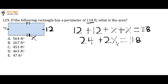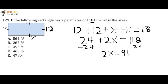Now I want to get X by itself. So if I have 24 plus 2X, I can subtract 24 from both sides. Then I'm left with 2X equals 94. Since 2X is the same as 2 times X, if I divide both sides by 2, I get rid of the 2s and leave X by itself on the left-hand side. Dividing 94 by 2, I find that X equals 47.